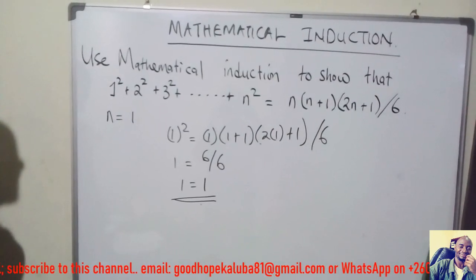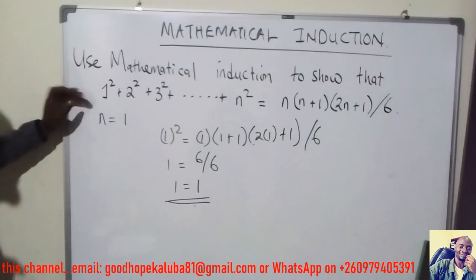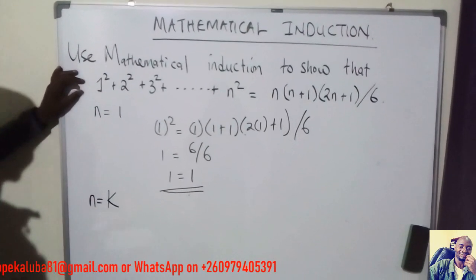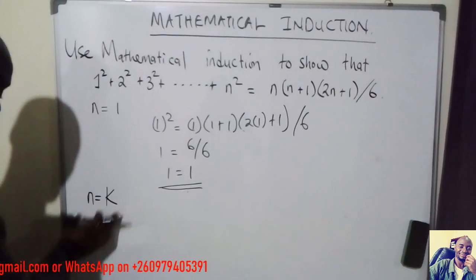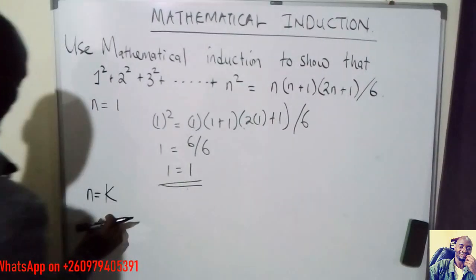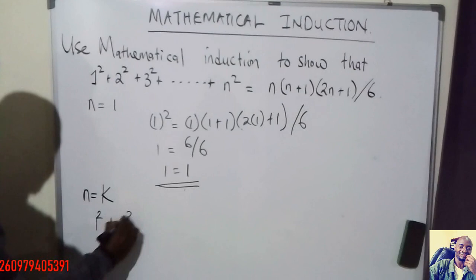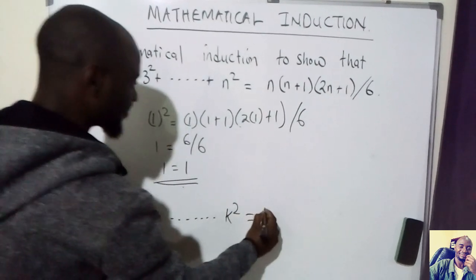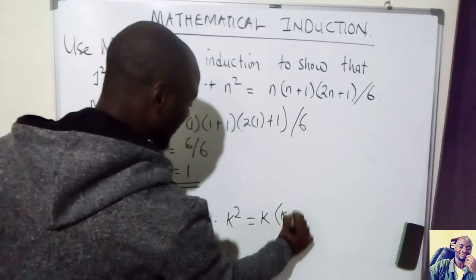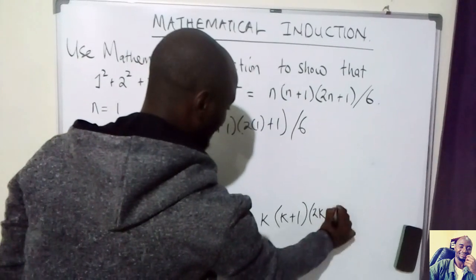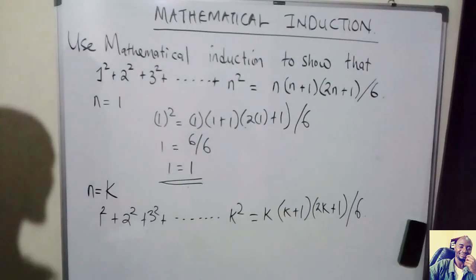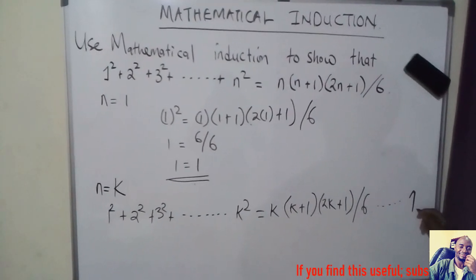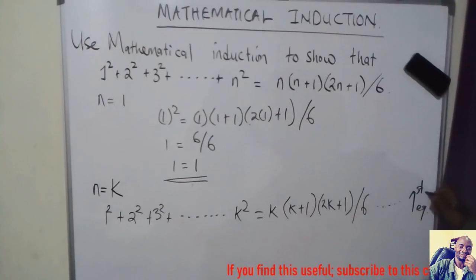The next step is to assume the formula is true for some positive integer k, so we set n equal to k. Wherever there is n, we put k. So we have 1 squared plus 2 squared plus 3 squared plus up to k squared equals k(k+1)(2k+1) divided by 6. We name this equation 1.